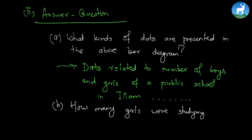Let's look at another question: how many girls were studying in 2015? For that you need to go to the section of 2015 and find out the number of girls, which turns out to be 500. So write down: 500 girls were studying in 2015.